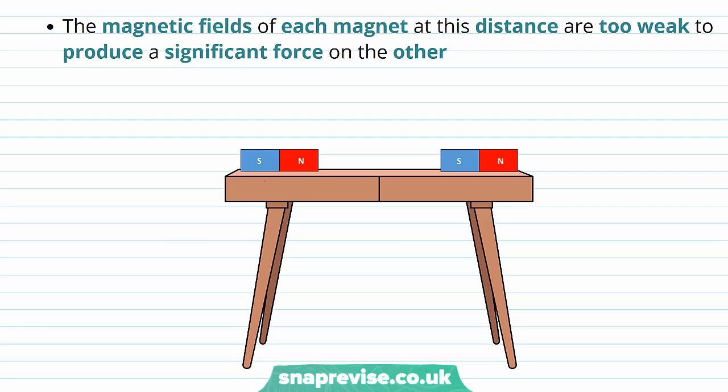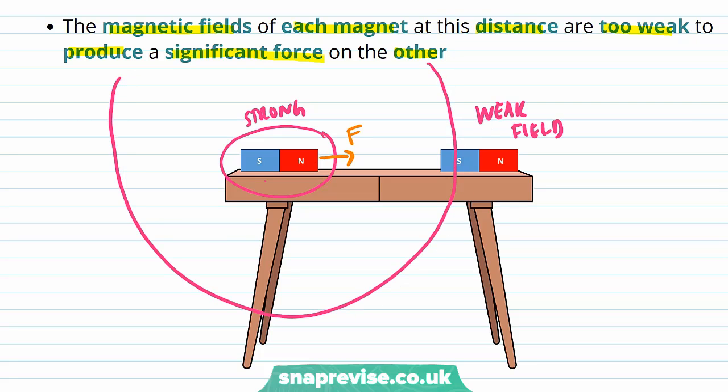This is because the magnetic fields of each magnet at this distance are too weak to produce a significant force on the other. So close by this magnet we have a strong force, which means that the magnets would attract each other if they were close together. However, at this distance the field is a lot weaker and therefore the force on this magnet is too small to be attracted to the other magnet.